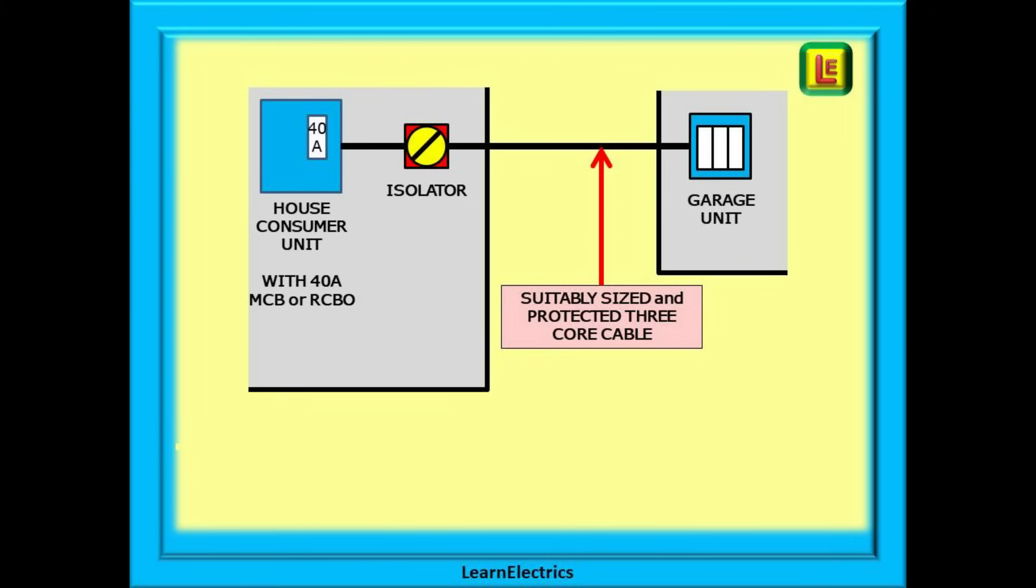Also if there is a problem at the garage end or the underground cable is damaged and the house RCD keeps tripping, the isolator will effectively isolate the garage circuit from the house enabling the house to be switched back on. And then if the garage is not very secure the isolator can be turned off to prevent unauthorized use of the customer's electricity. Just a thought.